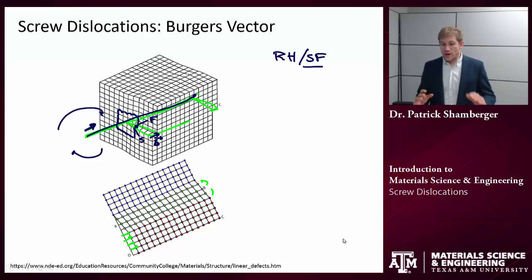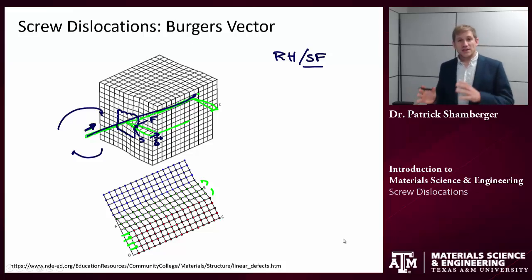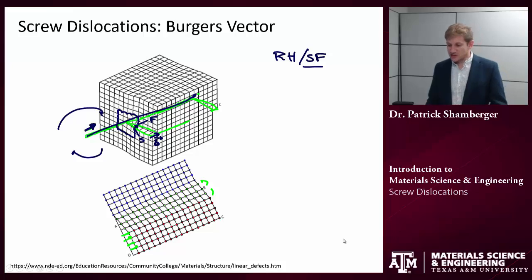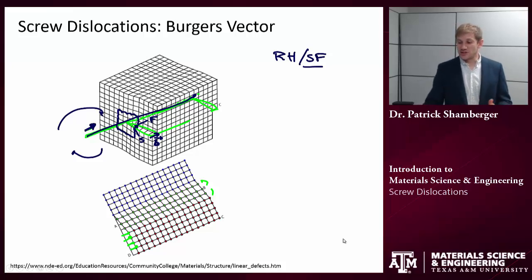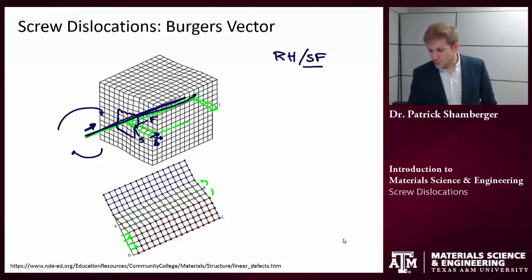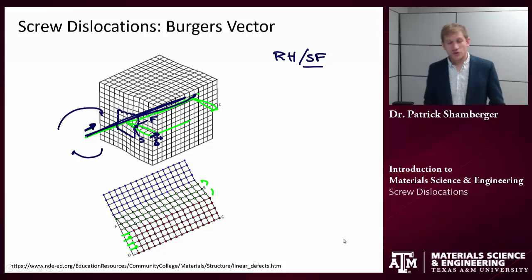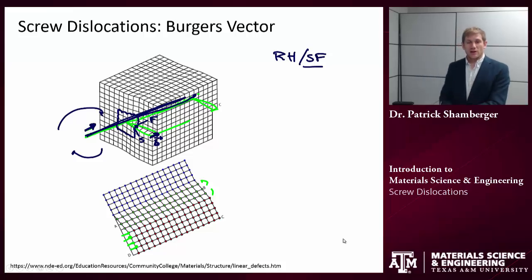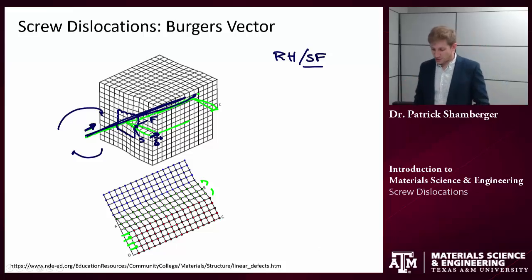As opposed to the edge dislocation, for the screw dislocation the Burgers vector is parallel to the dislocation itself. So the line of the dislocation and the Burgers vector are parallel. In edge dislocations, those two are perpendicular.